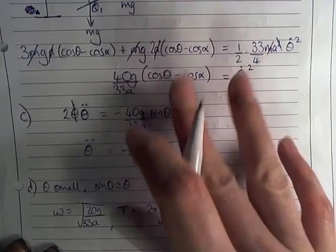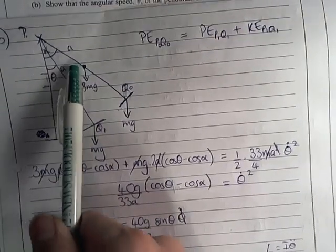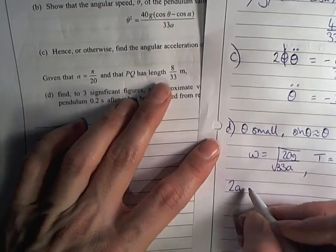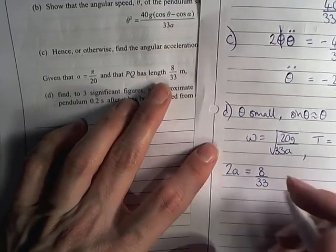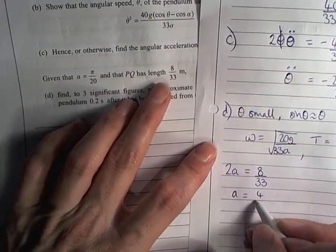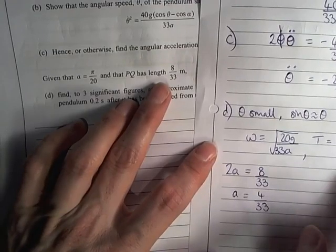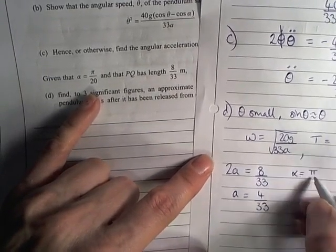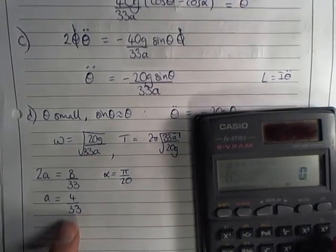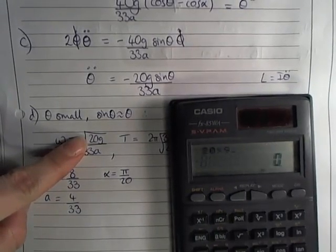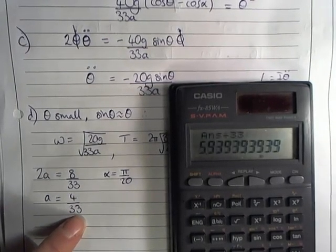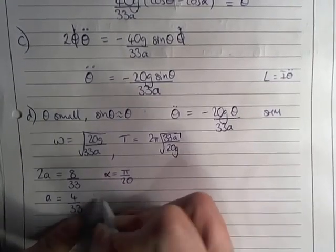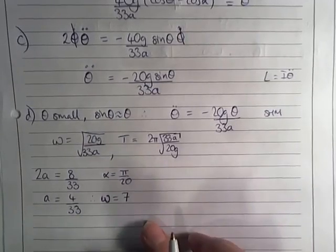Now I can put in my value for a and so on. For me, a was half the length of the rod. So in this case, the length of the rod, so 2a is equal to 8 over 33, and so therefore a is 4 over 33. So that's the value that I can put into all of these equations. Alpha is pi over 20. Now I can see that nice things are going to happen here when I put this value of a into this. Because if I do 20 times 9.8 and I divide that by 33, and then I divide that by 4 over 33, I end up with 49, which is then square rooted, and I end up with 7. So therefore my omega is this lovely value of 7.